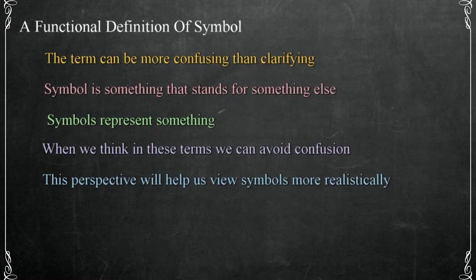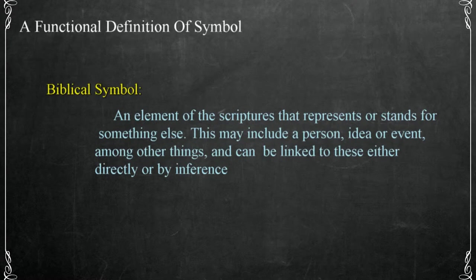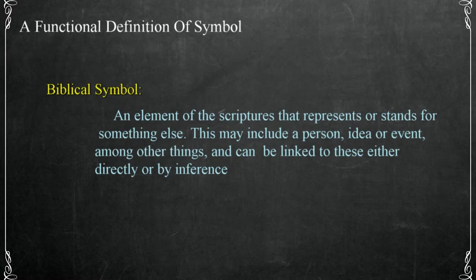The first part of a definition of biblical symbols is that they're elements that represent something else. We can define a biblical symbol as an element of the scriptures that represents or stands for something else. This may include a person, idea, or event, among other things, and can be linked to these either directly or by inference. Let's add another dimension to this that will be useful as we build the study. This dimension forms a necessary boundary: any symbol, representing something else, is restricted in application and interpretation based on the relative context it appears in.